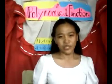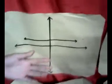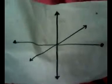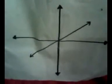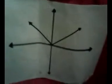So we finish the properties of Polynomial Function. Let's proceed to the 4 types of Polynomial Function. The first one is the constant function. The second one is called the power function. The third one is called the identity function. And the last one is the absolute function.